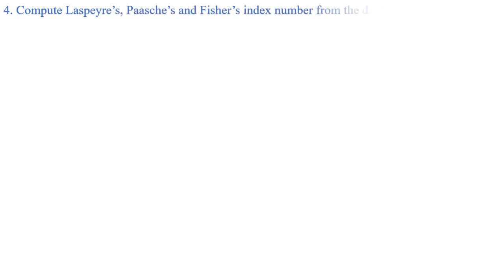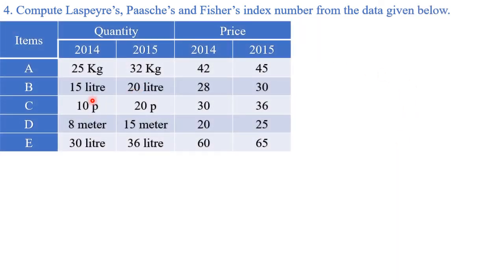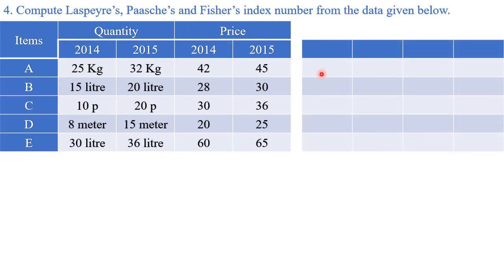Question 4: compute Laspeyres', Paasche's, and Fisher's index numbers for the given data. Items A, B, C, D, E; quantities for 2014 and 2015; prices for 2014 and 2015 are directly provided. Using q0, q1, p0, p1 we create the same four columns: p1·q0, p0·q0, p1·q1, p0·q1.